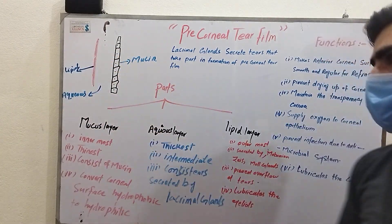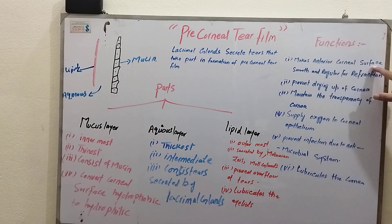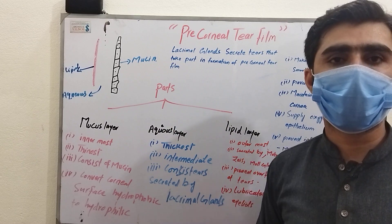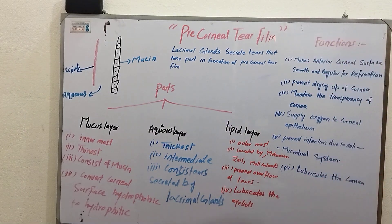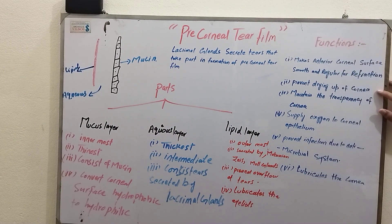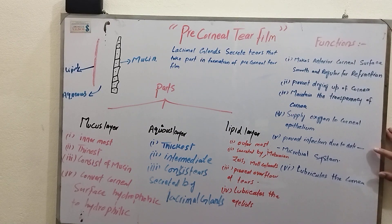Now we are going to explain the functions of pre-corneal tear film. First, it makes the anterior corneal surface smooth and regular for refraction. Second, it prevents drying up of the cornea. Third, it maintains the transparency of the cornea. Fourth, it supplies oxygen to the corneal epithelium. Fifth, it prevents infection due to its antimicrobial system.